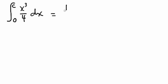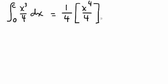One-fourth can get pulled through the integral, and then we're left with integrating x cubed, which is x to the fourth over 4, and we need to evaluate that at x equals 0 and x equals c.